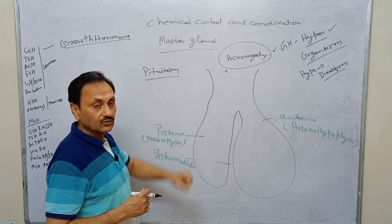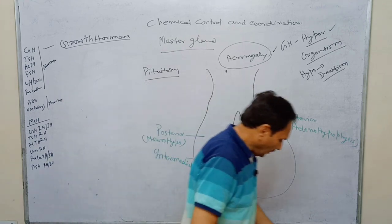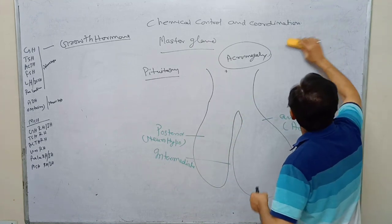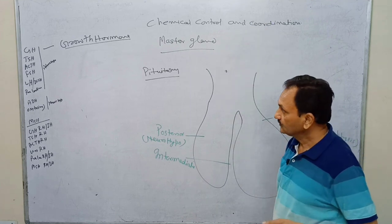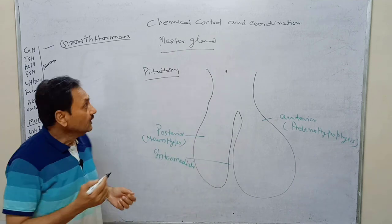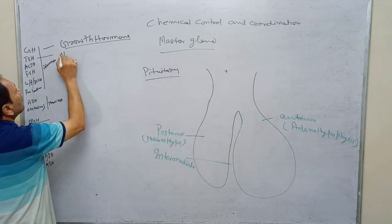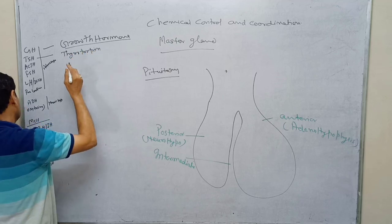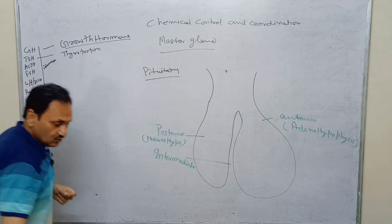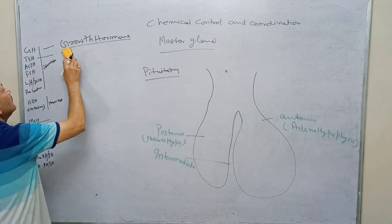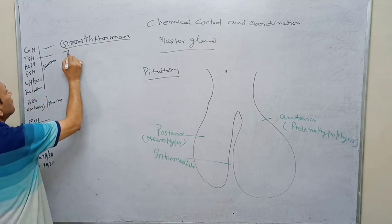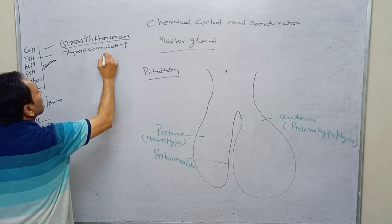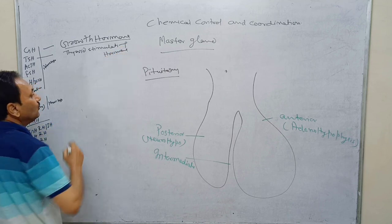If growth hormone is in excess, abnormal growth also occurs. Its secretion is minimized at a certain age, and is controlled by the hypothalamus. The next hormone is thyrotropin, also called thyroid stimulating hormone or TSH.